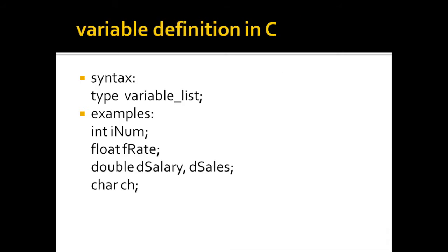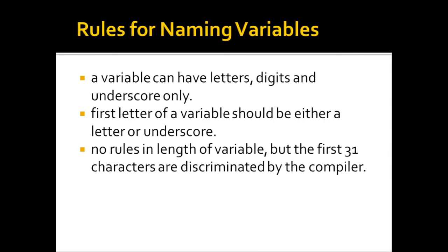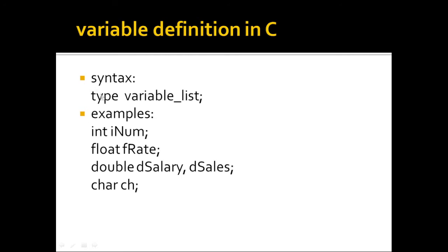The syntax for defining variables in C is: data type followed by the variable list. For example, int is the data type and n is the variable. Another example: float as the data type followed by the variable frate. You can also declare multiple variables: double followed by salary and sales. For char, we have ch. Variables in a list are separated by commas.